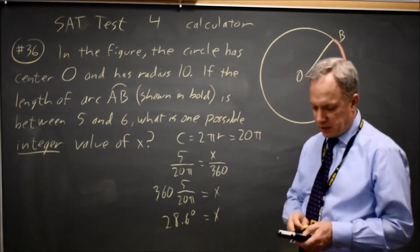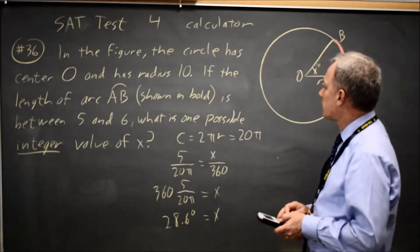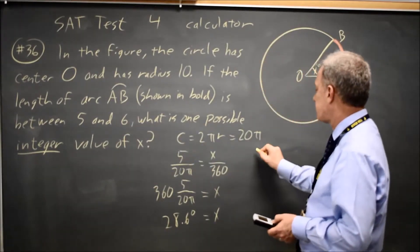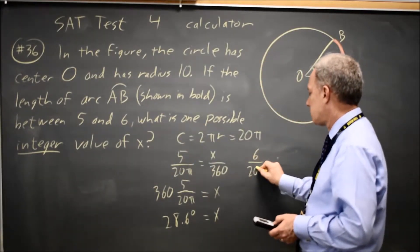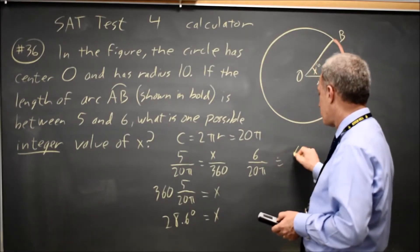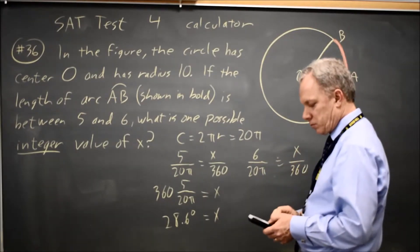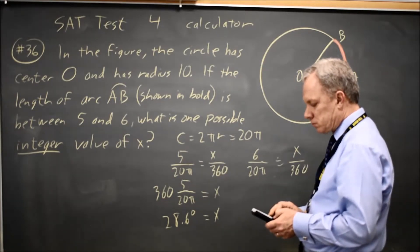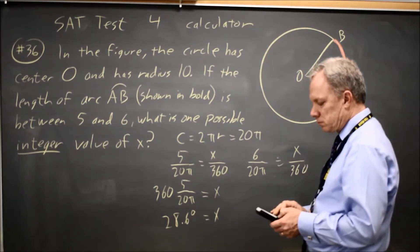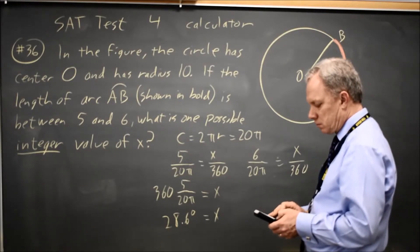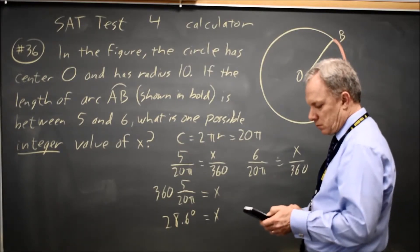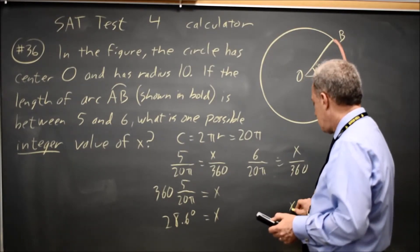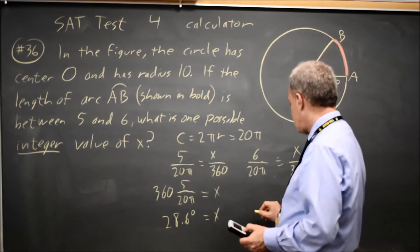If I do it again for an arc length of 6 — they said that the length is between 5 and 6, so that's 5 taken care of. Let's find 6. And I get x equals 34.4.